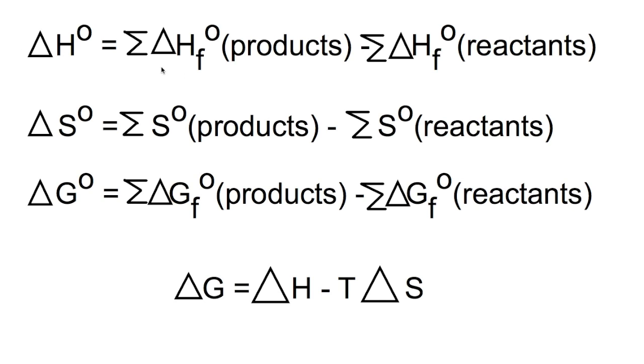Enthalpy change tells us if a reaction is exo or endothermic but it does not tell us if a reaction is feasible. Entropy change tells us if there is an increase or decrease in disorder of the reaction. And Gibbs free energy combines the two to allow us to see if the reaction is feasible.